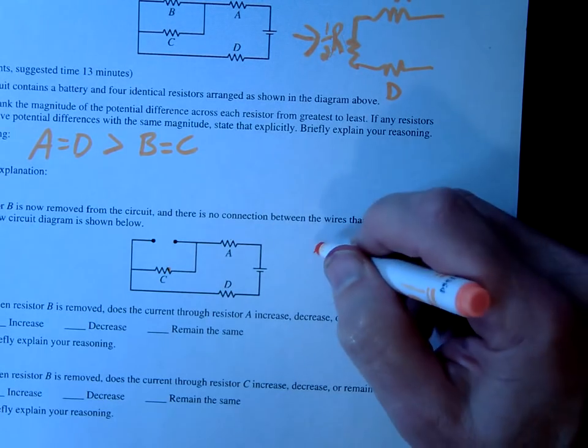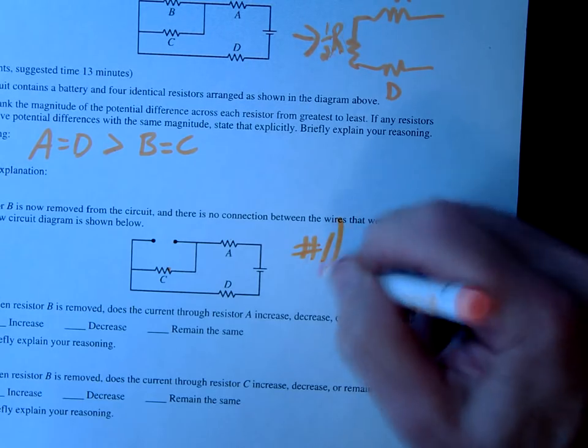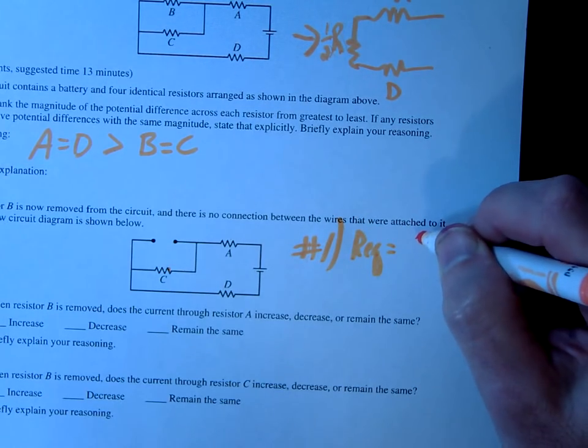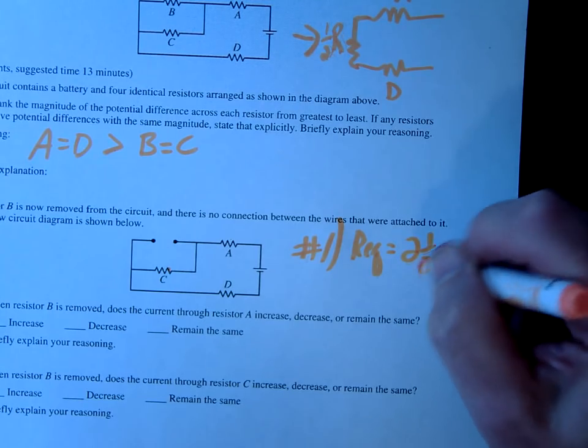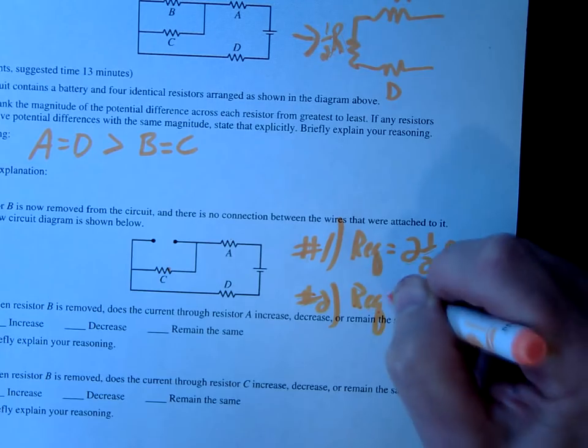So notice, in the first one, number one, R equivalent would be 2 plus half, right? 2 and a half R. And number two, R equivalent is 3R.